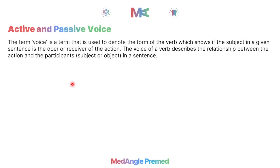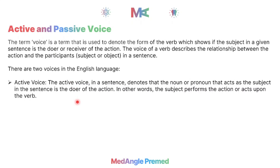We discuss two voices: active and passive voice. We look at the verb, which represents the action, and the participants, which are the subject and object. In active voice, the structure is: first we have a subject — the doer of the action — then a verb or action, and then an object — the receiver of the action.